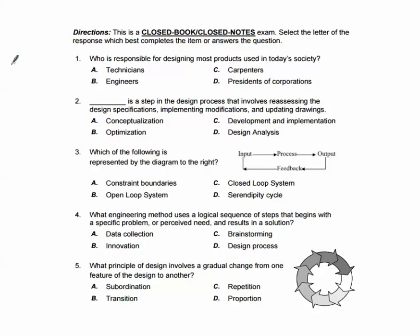Question one: Who is responsible for designing most products used in today's society? Well, if we hopefully know that by now, it's going to be engineers. Number two, what is a step of the design process that involves reassessing the design specifications, implementing modifications, and updating drawings? That would be optimization.